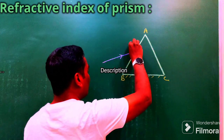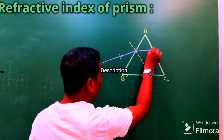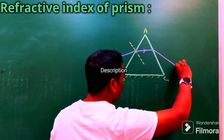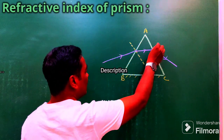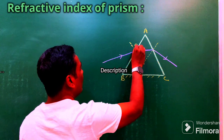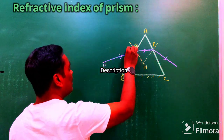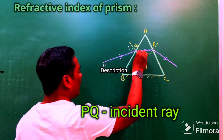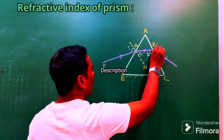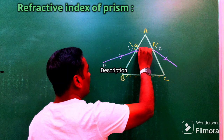At the point of incidence, I draw the normal. The light gets refracted and travels almost parallel to the base, then emerges from the second refracting surface at some angle. At the second refracting surface I again draw the normal. The incident ray PQ makes an angle of incidence i. The refracted angle at the first surface is r1, and the angle of incidence at the second surface is r2. The angle of emergence is e.